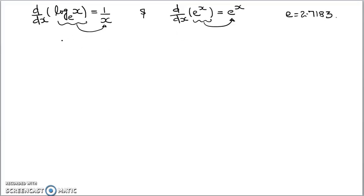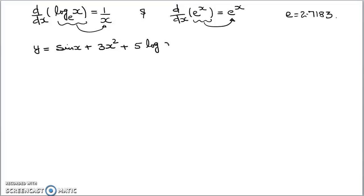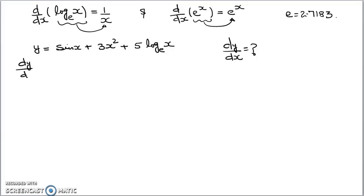We will apply these two formulas in one or two examples. Suppose y is given as sin x plus 3x square plus 5 log x with base e, and the question asks to find the value of dy by dx. Taking derivative on both sides with respect to x, we write dy upon dx.